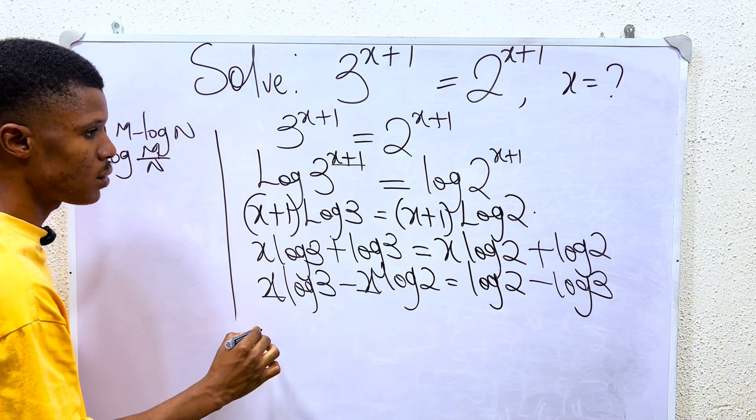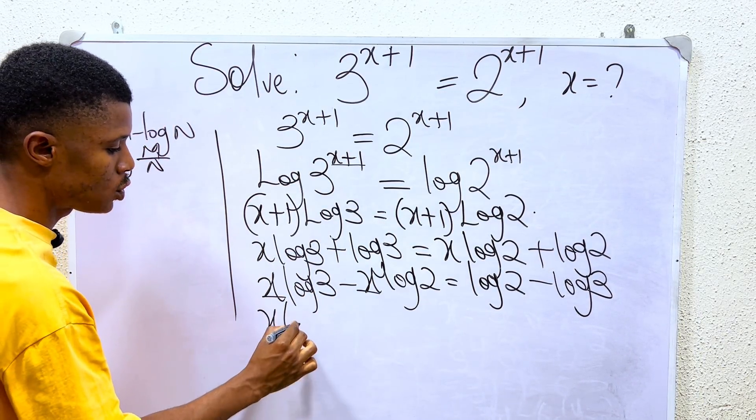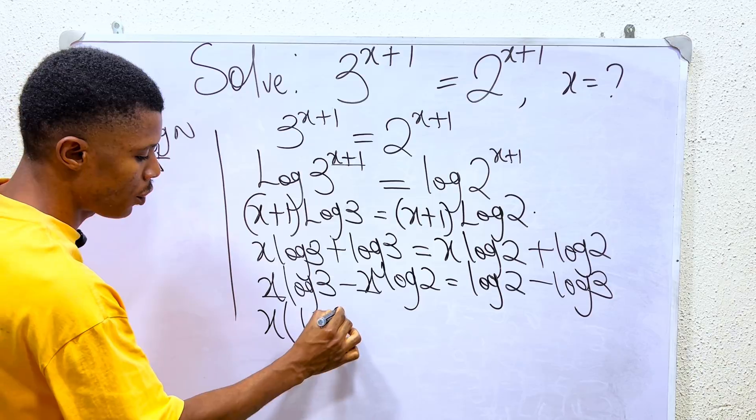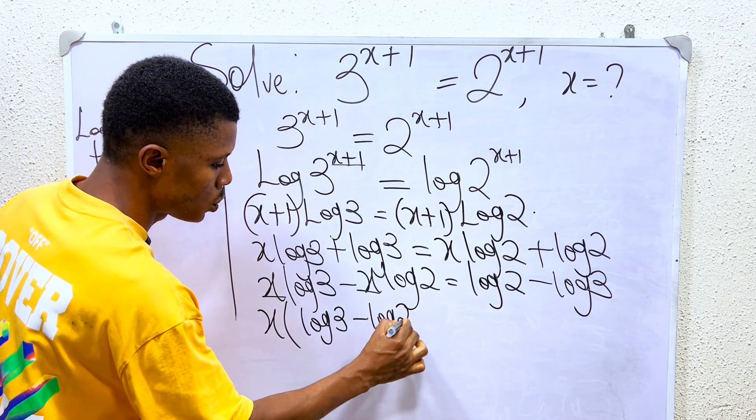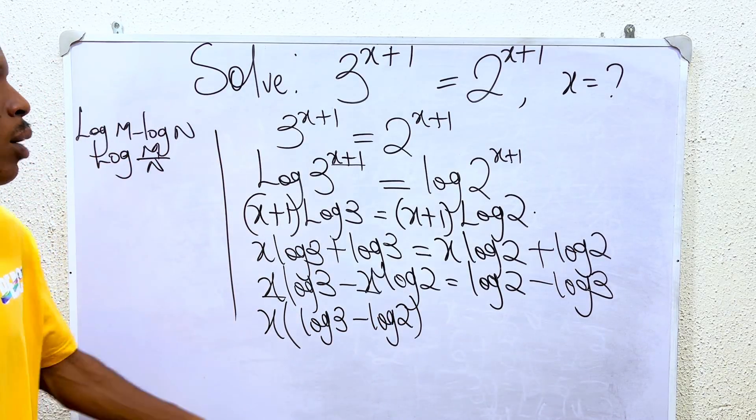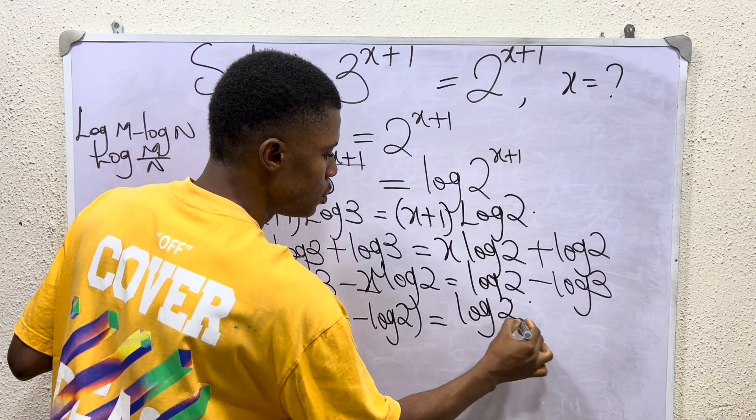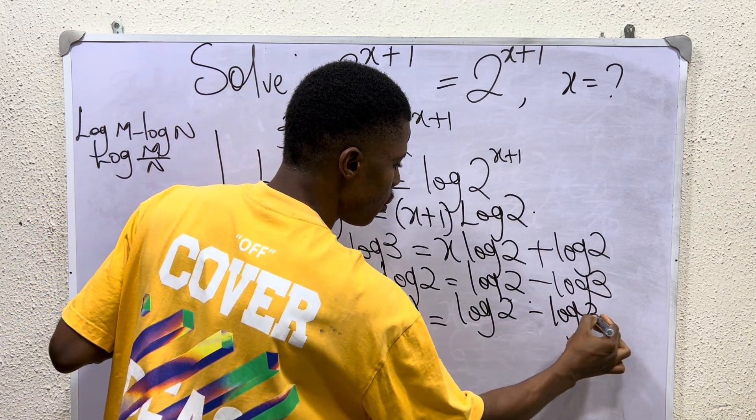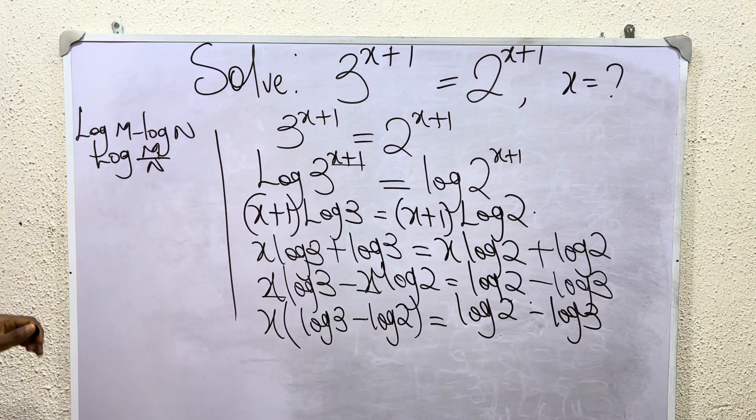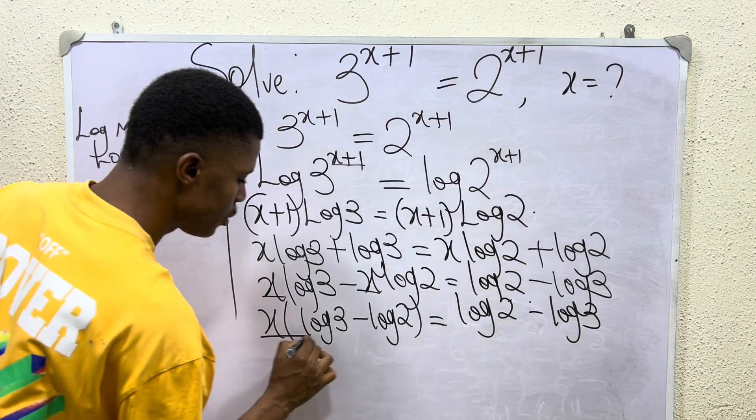If you have this rule, we can actually factor x here. So if I factorize x, I get x into (log 3 - log 2). Then what do I have here? Log 2 minus log 3.